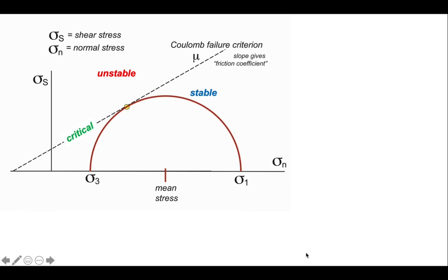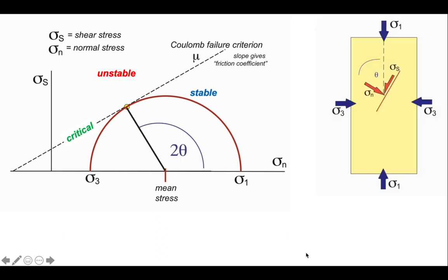For the particular values of sigma 1 and sigma 3 we've used to construct the Mohr circle, we can read off the relationship between the point on the failure envelope and find the orientation — there's 2 theta. Looking at its relationship to our block diagram, we can see the relationship between sigma 1, sigma 3, the normal stress, and the fault that is primed to slip. So we can use this to establish which orientations of faults are likely to move given a particular stress regime.